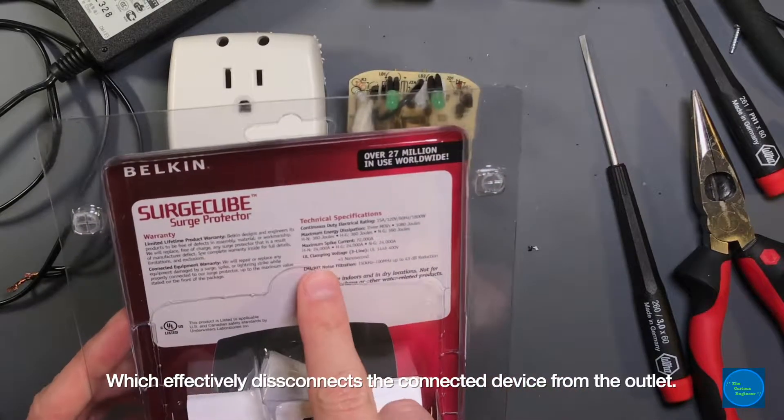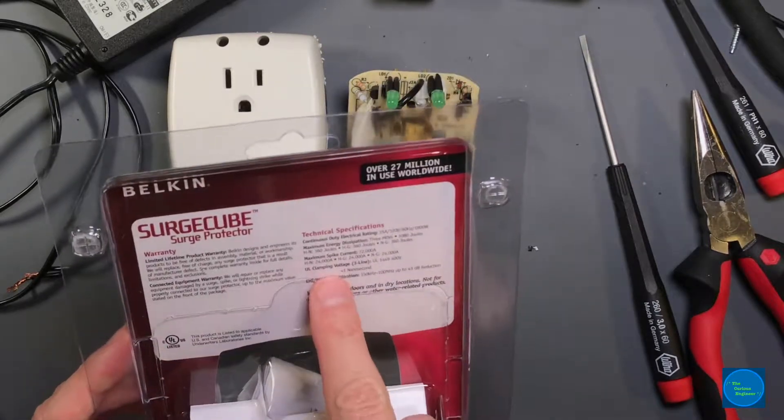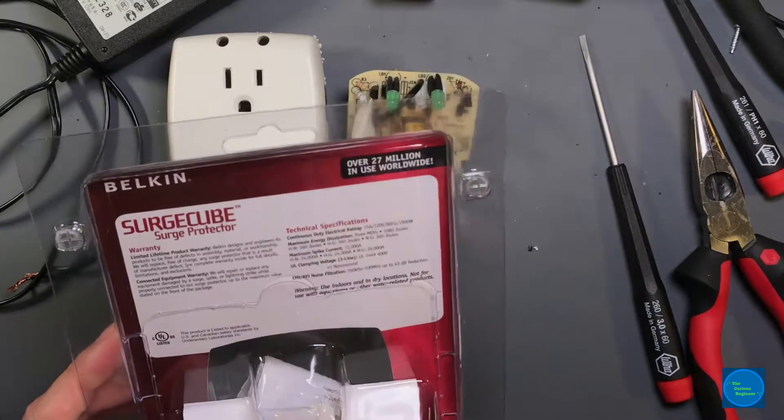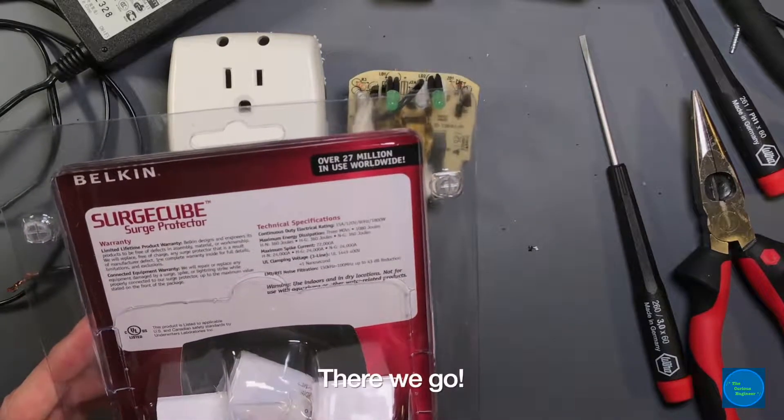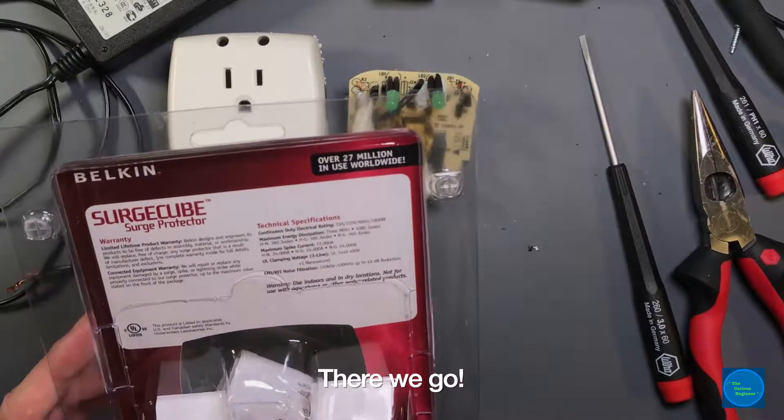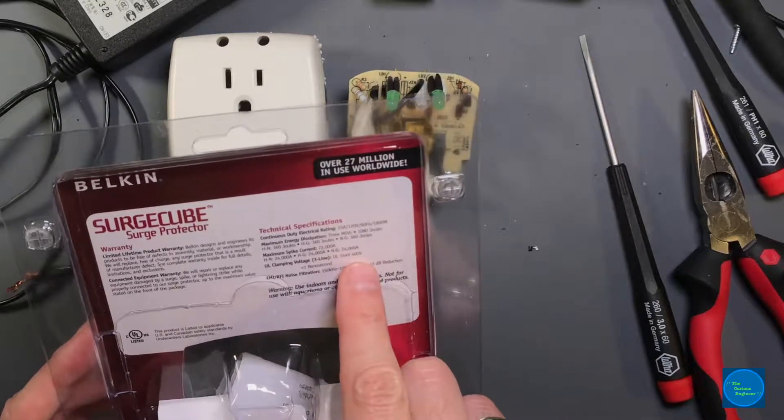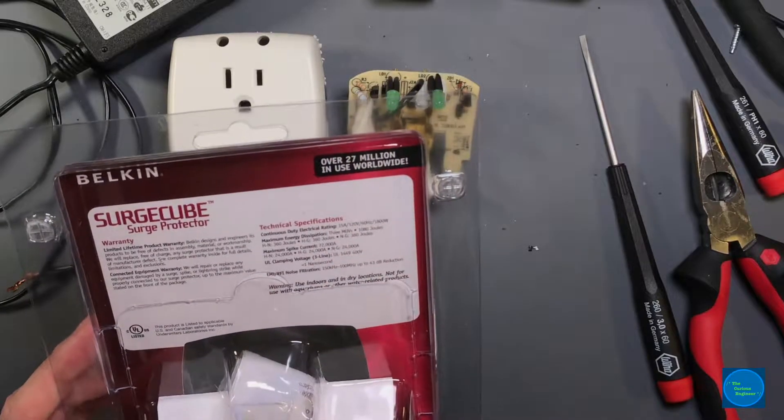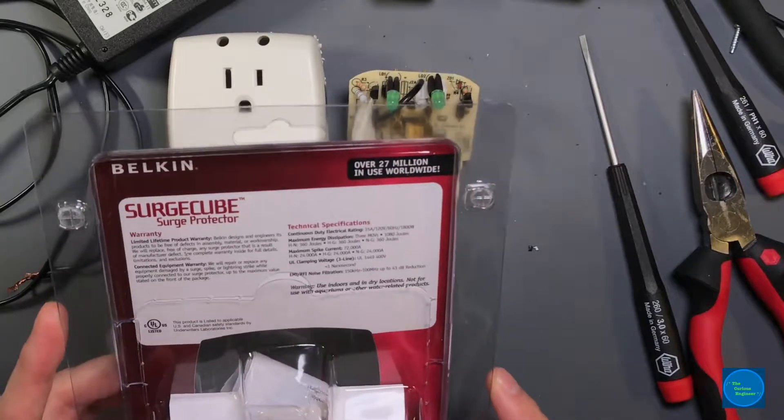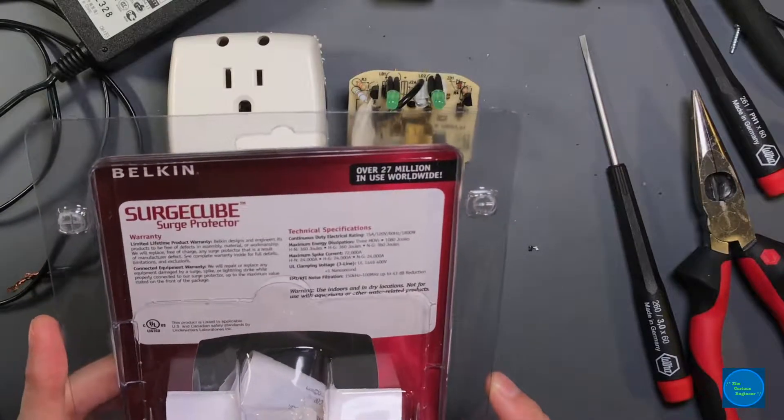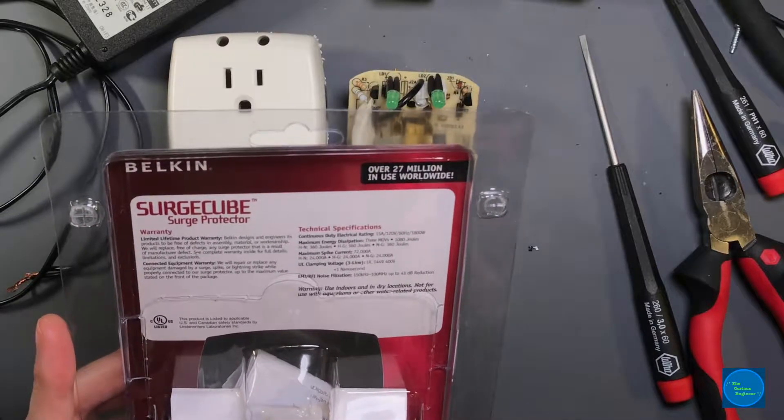I kind of jumped ahead a little bit. But then there's the UL clamping voltage. That's the voltage at which it will clamp down and shunt all the energy to wherever it's coming from, to either neutral or ground. That voltage per the UL 1449 standard is 400 volts, and that occurs within less than one nanosecond. Just bear that in mind, we'll come back to that in a moment.